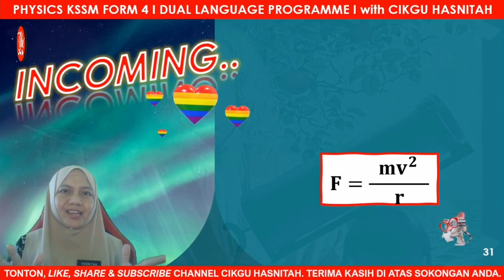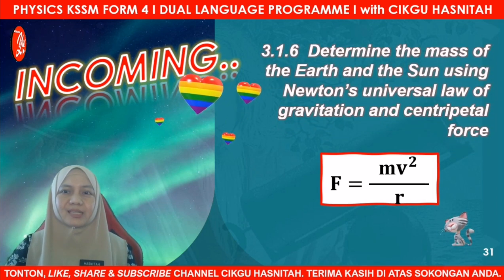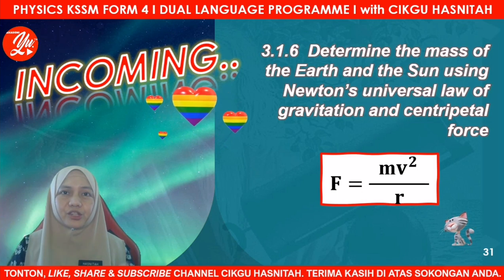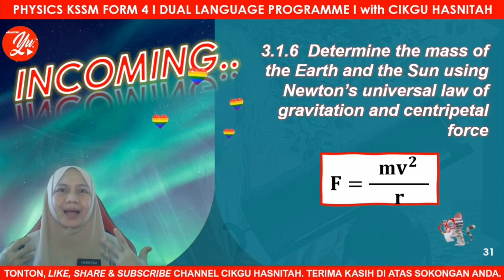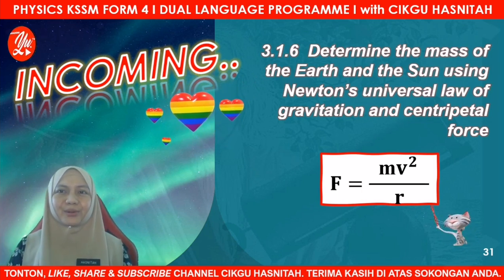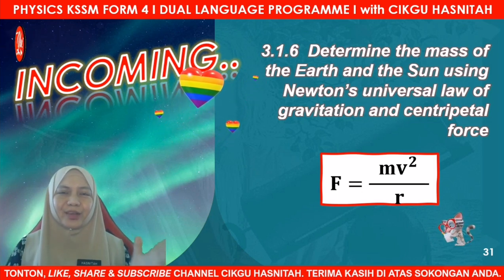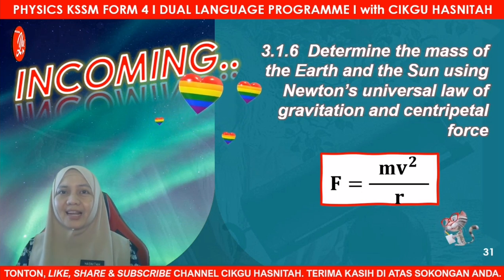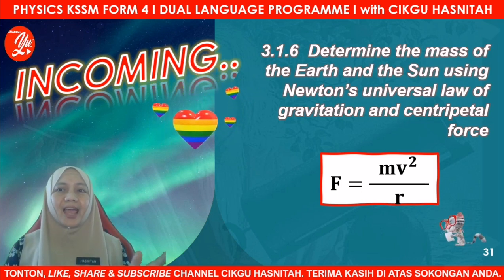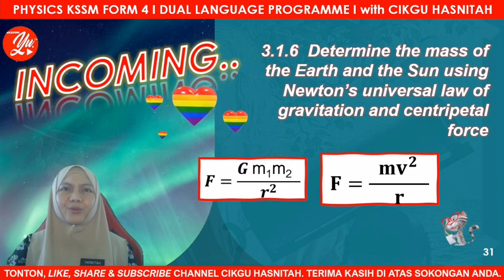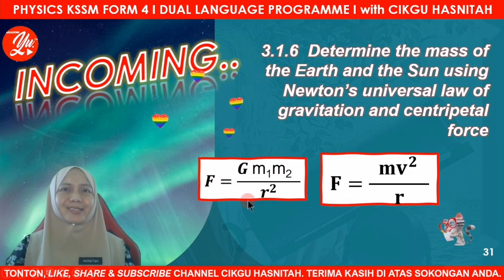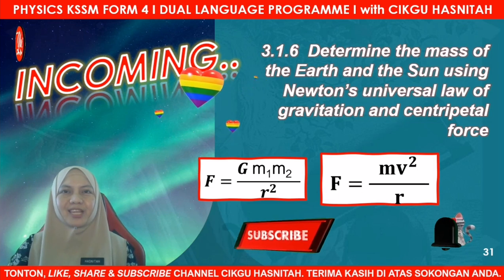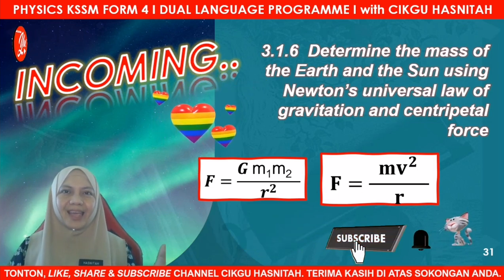That's all for today. We have finished this class on centripetal force. I hope you are clear on: first, the definition of centripetal force; second, the formula F = mv²/R; and most importantly, how to apply that formula to solve problems. Don't forget to join me again in my next video where we will continue with 3.1.6 on how to determine the mass of the Earth and the Sun using Newton's Universal Law of Gravitation combined with centripetal force. Thank you for joining me — Assalamualaikum, have a pleasant day and bye bye for now.